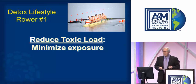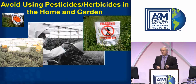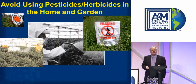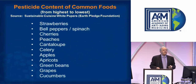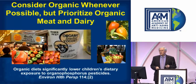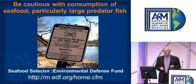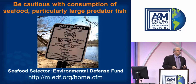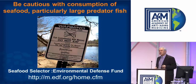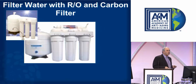The first rower: we want to reduce our exposure and reduce our toxic load. We should reduce the use of pesticides and herbicides in homes and gardens. Here's a list of foods with strawberries at the top and cucumbers at the bottom for pesticide content. We want to consider eating organic whenever possible, especially with meat and dairy. We need to be cautious about our consumption of fish, because a lot of fish is contaminated with mercury and chemicals. We want to drink as pure and high quality water as possible.